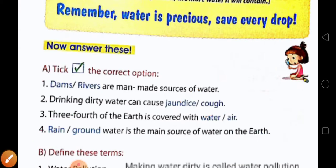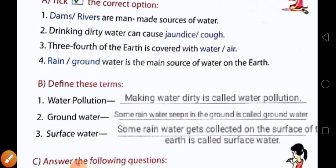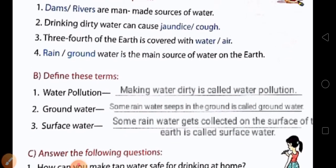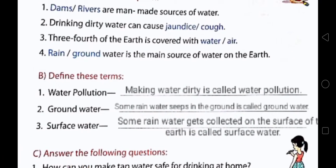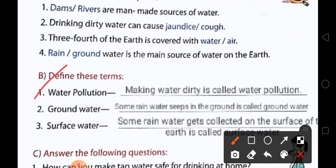Now we will come to the next question. These defined terms are very important. You have to learn them thoroughly. Number one: water pollution. Making water dirty is called water pollution.